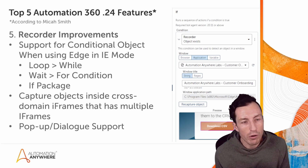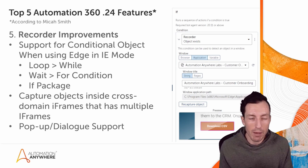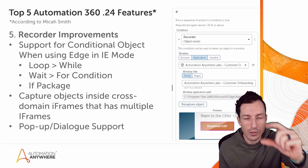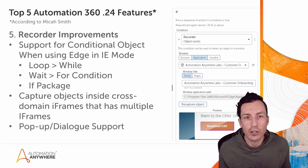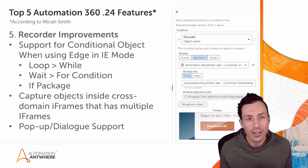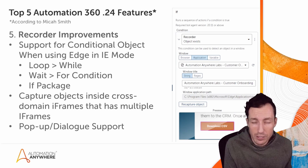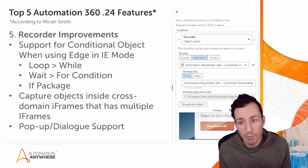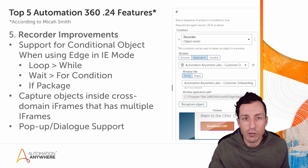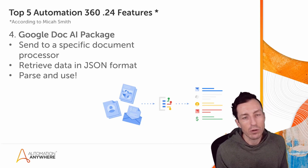The other recorder improvement I wanted to highlight was the pop-up and dialog support. Sometimes in an application you might see a gray bar at the top that pops up — a JavaScript notification. You can now dismiss and interact with those using the recorder package. That's great functionality because those can be challenging to deal with — sometimes you try keystrokes, image-based recognition, or a recorder with an application instead of a browser. You now have native support for those with the recorder package.